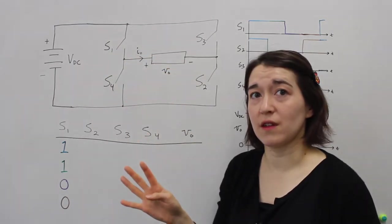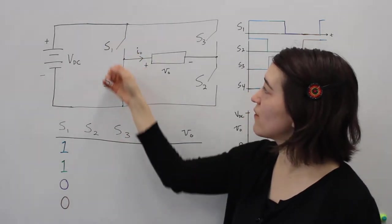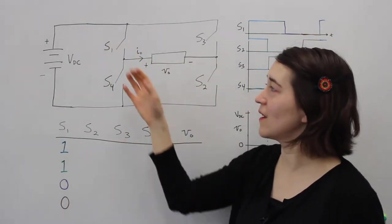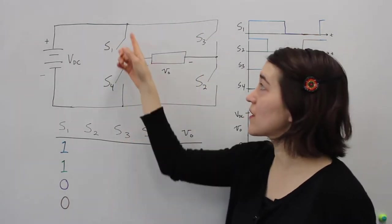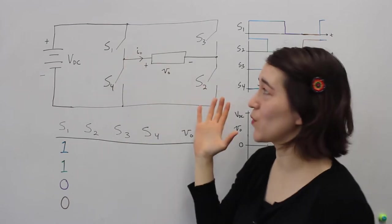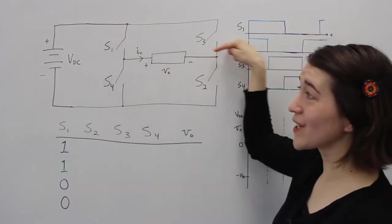We have four switches this time and they're configured in this orientation. This is called the full bridge. It's supposed to be like a bridge. Here's your bridge.